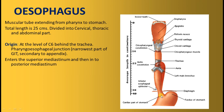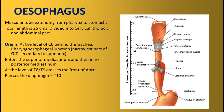At T11, the esophagus opens into the cardiac end of the stomach. Just before piercing the diaphragm at T10, it comes to lie anterior to the descending thoracic aorta. Above the T8–T9 level it was present almost to the right of the descending thoracic aorta, but at T8–T9 it comes anteriorly, then pierces the diaphragm at T10 and opens into the stomach at T11.